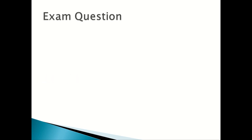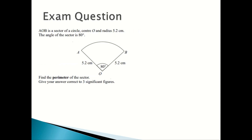Now we're going to look at an exam question. AOB is a sector of a circle, centre O and radius 5.2 centimetres. The angle of the sector is 80 degrees. Find the perimeter of the sector. Give your answer correct to 3 significant figures. This is a different type of arc length question where it has more than one step — you first find the arc length, then use the radii given in the question to find the perimeter, because the perimeter is the two radii plus the arc length.